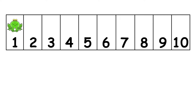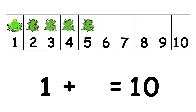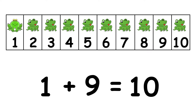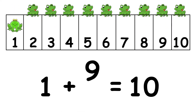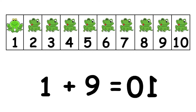We have 1 frog. How many more do we need to make 10? 1, 2, 3, 4, 5, 6, 7, 8, 9. 1 and 9 makes 10.